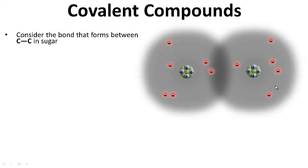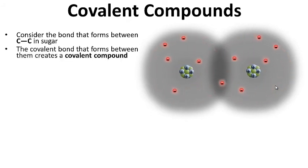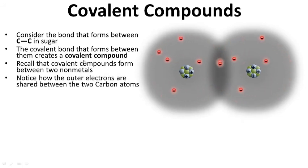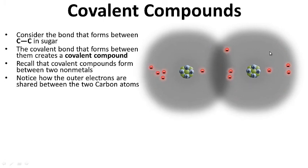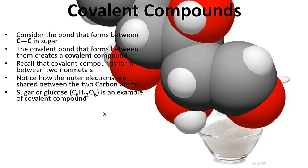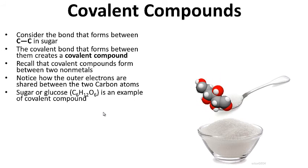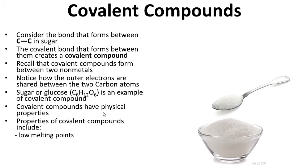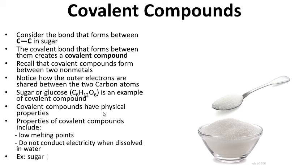Covalent compounds: consider the bond that forms between carbon and carbon in sugar. The covalent bond that forms between them creates a covalent compound. Recall that covalent compounds form between two non-metals — carbon and carbon, two non-metals. Notice the outer electrons are shared between the two carbon atoms. Sugar, or glucose, is an example of a covalent compound made up of mostly covalent bonds. Properties of covalent compounds include low melting points — they melt very easily — and they do not conduct electricity when dissolved in water. An example is glucose.